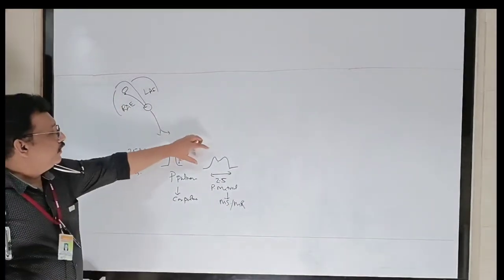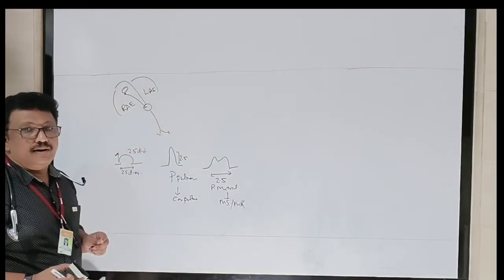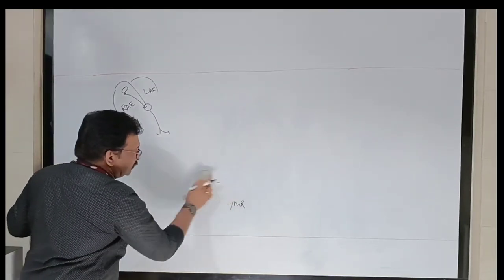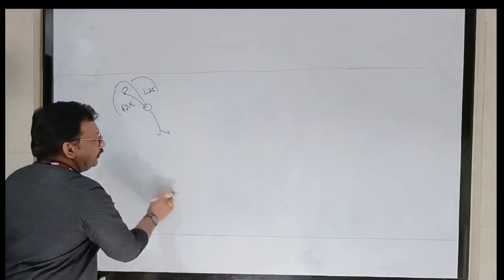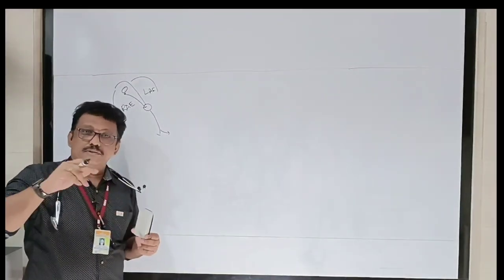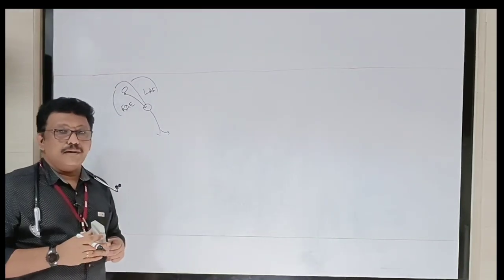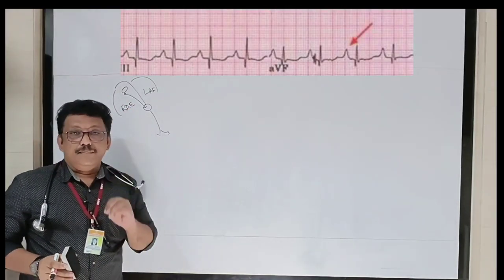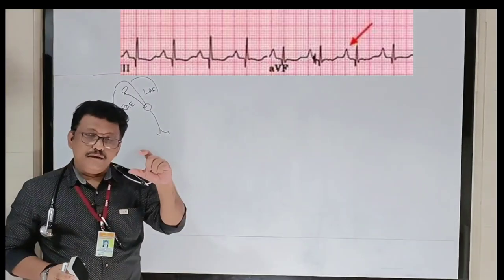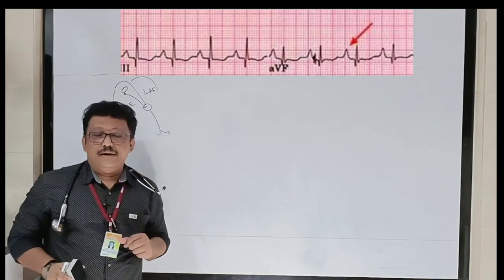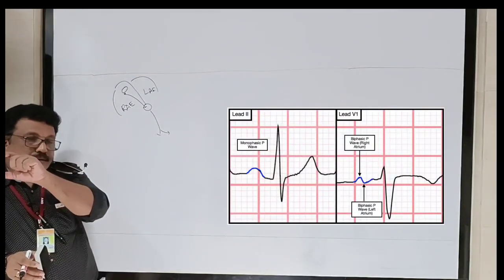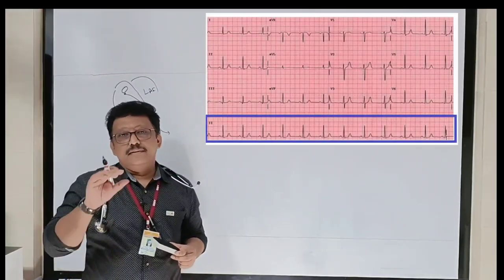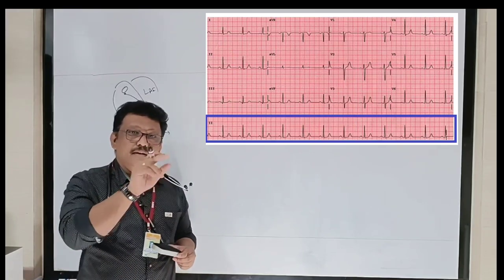Remember: a tall P wave in all leads is P pulmonale, seen in right atrial enlargement. A wide notched P wave is seen in left atrial enlargement. P wave should be observed in either lead II or V1. We take lead II as the rhythm strip — you can see it in the lower part of the ECG — where the P wave can be seen properly.